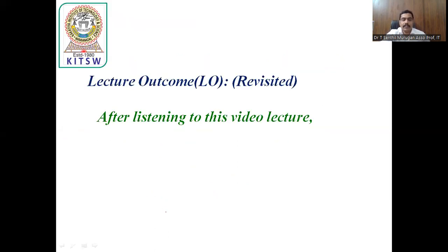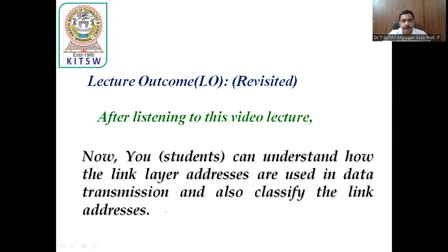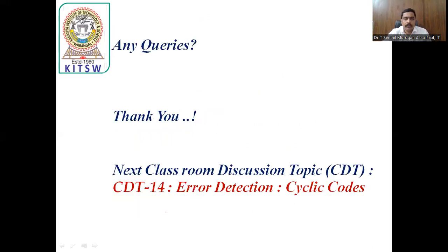So now in this lecture, after listening to this video lecture, as a student you can understand how the link layer is used in data transmission and also how to classify the link layer addresses — whether it is a unicast address, multicast address, or broadcast address. Thank you very much for listening to this video. The next video classroom discussion topic is error detection with cyclic codes. If any query is there, we will discuss in the classroom. Thank you very much.